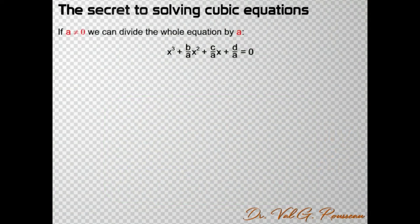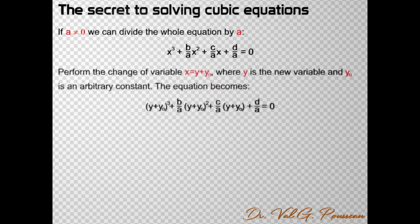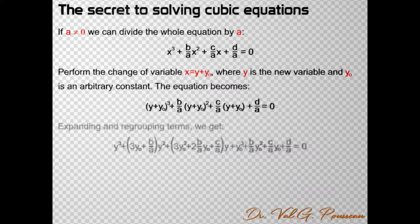Thus, we can divide the whole equation by a, and then we can always do the change of variable x = y - y₀, where y is the new unknown and y₀ is an arbitrary constant. This leads to an equation that looks more complicated, but it really is not. We can expand it and group the terms that correspond to different powers of y.